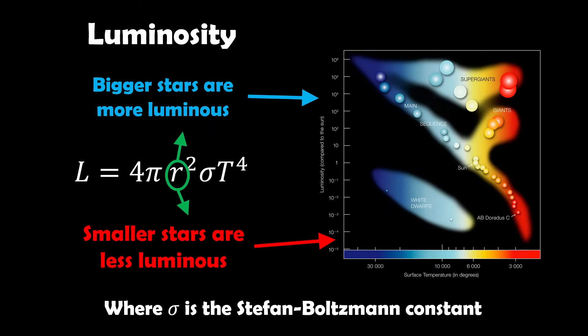For luminosity of a star, the equation is L = 4πr² where r is the radius of the star, then you have σ, which is the Stefan-Boltzmann constant, and then you have T to the fourth power, which is the temperature.